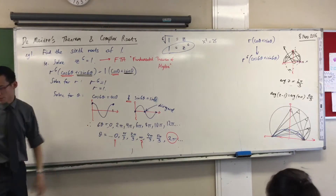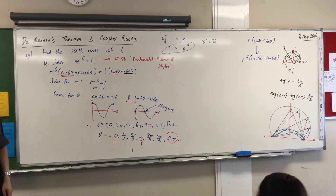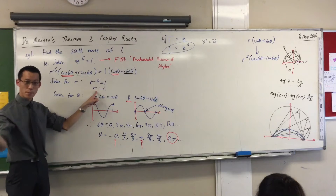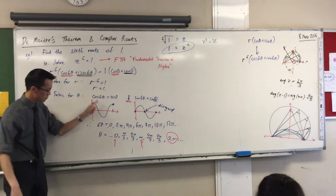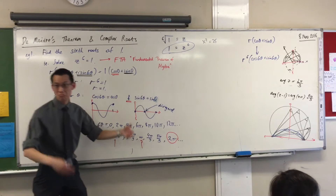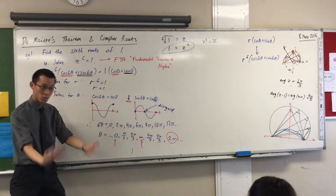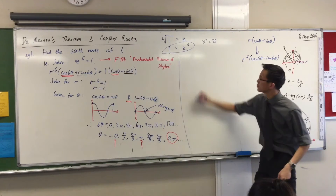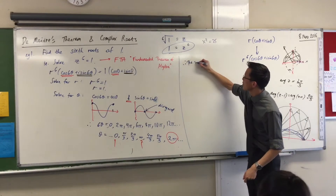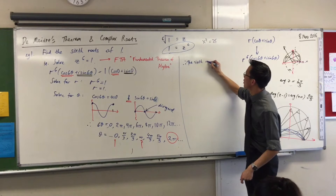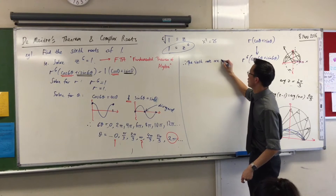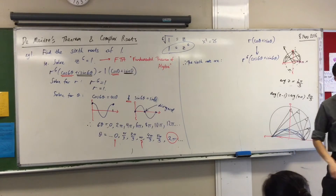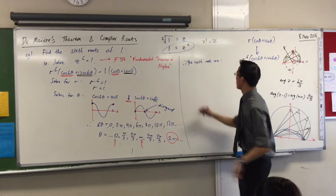All right, I'm almost done. We can actually answer the question now. The question was: what are the sixth roots? I know all of them have a modulus of one. I've found all these different angles. Now I just have to state what the roots are — I'll go over here. Therefore, the sixth roots are — we're going to list them, and then we're going to draw them.